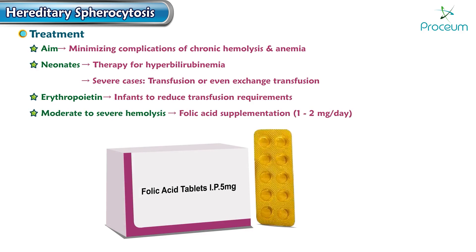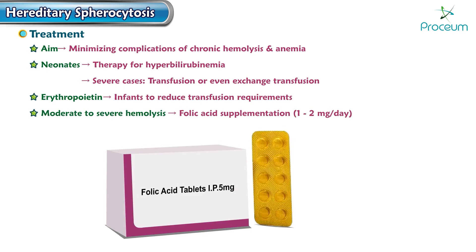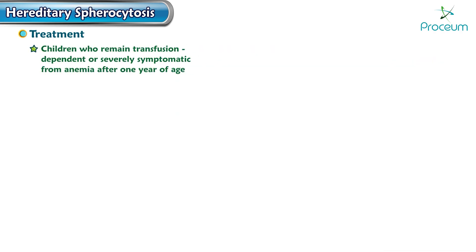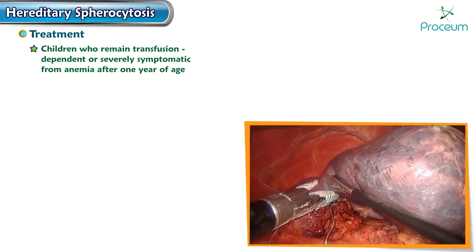Moderate to severe hemolysis requires folic acid supplementation of about 1 to 2 mg per day. Pregnant women with hereditary spherocytosis require higher doses of folic acid. Children with hereditary spherocytosis who remain transfusion-dependent or severely symptomatic from anemia after one year of age should undergo splenectomy.